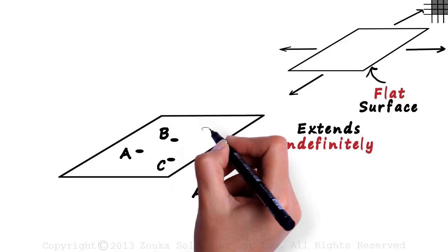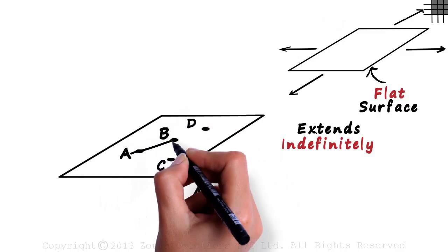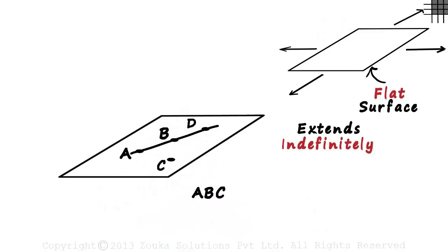If we have a point D on the plane such that A, B and D form a straight line, then this plane cannot be called ABD.